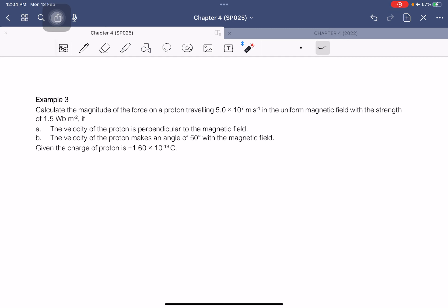We have to calculate the velocity of the proton if it is perpendicular to the magnetic field. Given is the force to be equal to... wait, calculate the magnitude of the force. So it is travelling at 5 × 10^7 meters per second, and the strength of the magnetic field is 1.5 tesla.